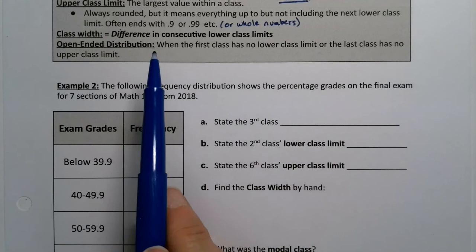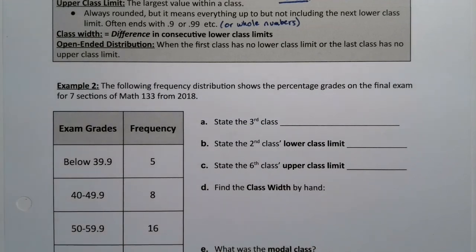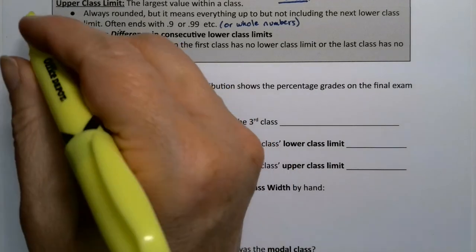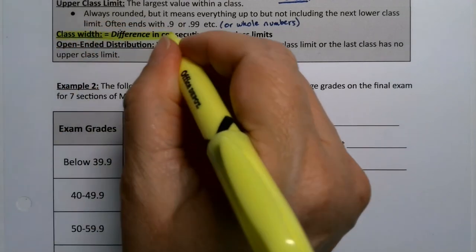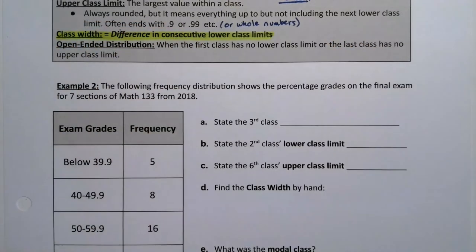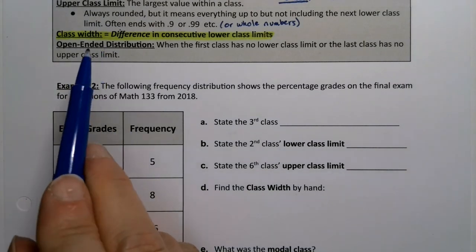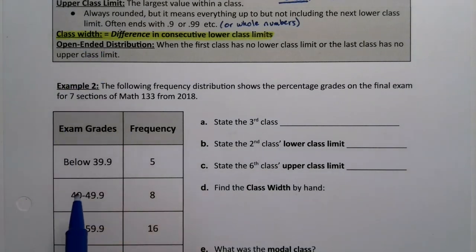Now, the class width is the difference in lower class limits. Technically, you can do it as the difference in upper class limits as well. Not all distributions have an even class width that's the same throughout, just as a warning to you.